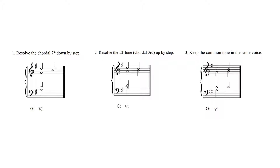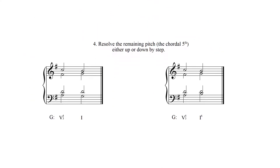Next, resolve the leading tone up by step. In this example, the leading tone is the F sharp in the alto voice. Then keep the common tone in the same voice, which again is the D in the tenor. And lastly, step four: move the remaining pitch — the chordal fifth — up or down by step depending on the context. As you can see, there are two possible solutions. On the left side of the page, the A moves down by step to the G, creating a root position tonic triad with the likely doubled chordal root. However, on the right side of the page, the chordal fifth moves up by step, forming a first inversion tonic triad with a doubled chordal third. While root position triads often have a doubled chordal root, the doubling of first inversion triads is far more varied.